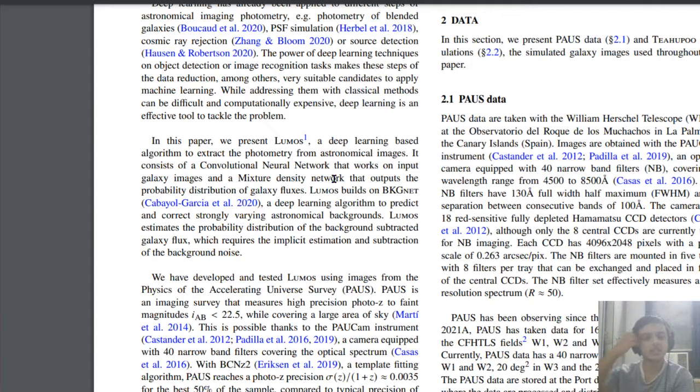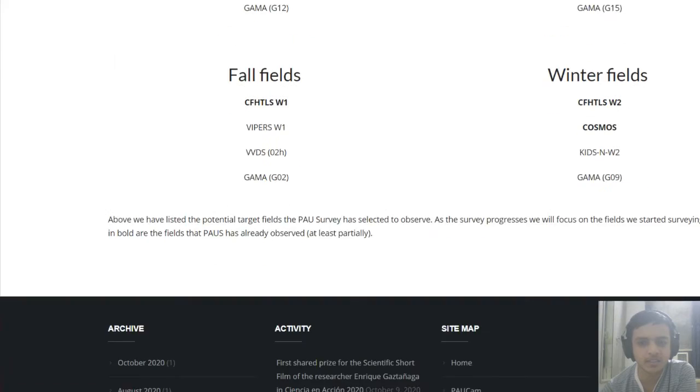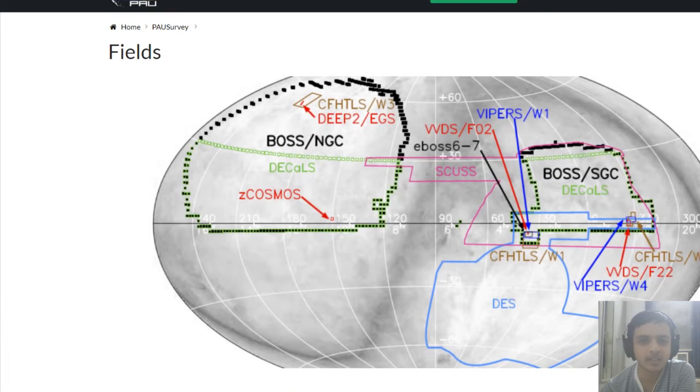They talk about their algorithm which is Lumos. Since this is image data, the algorithm will mostly be a convolutional neural network. The algorithm builds a net which is BKG net and it tries to predict the backgrounds as we will see in the results. The data is taken from the PAU survey.